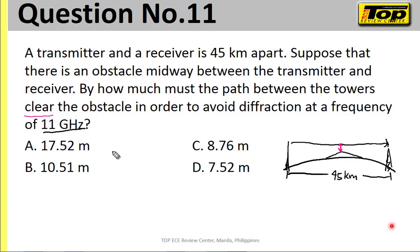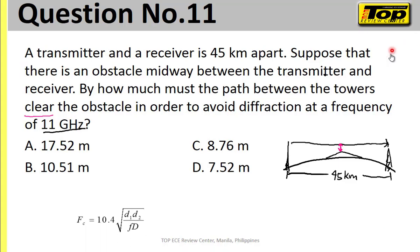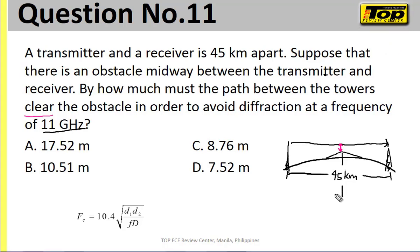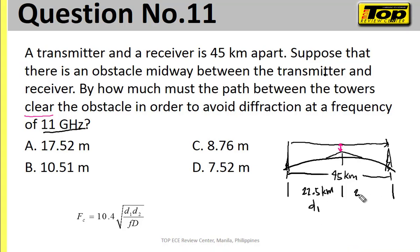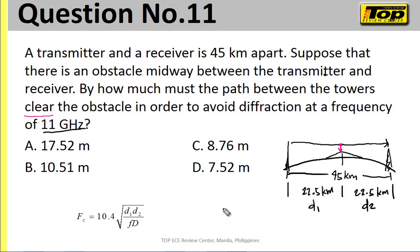How do we compute for the Fresnel clearance? We will directly solve for the Fresnel clearance without solving for the Fresnel radius first. The equation is: 10.4 times the square root of (D1 × D2) / (F × D). D1 is half of 45 kilometers, which is 22.5 kilometers. D2 is also 22.5 kilometers since the obstacle is halfway. D is the whole distance — 45 kilometers.